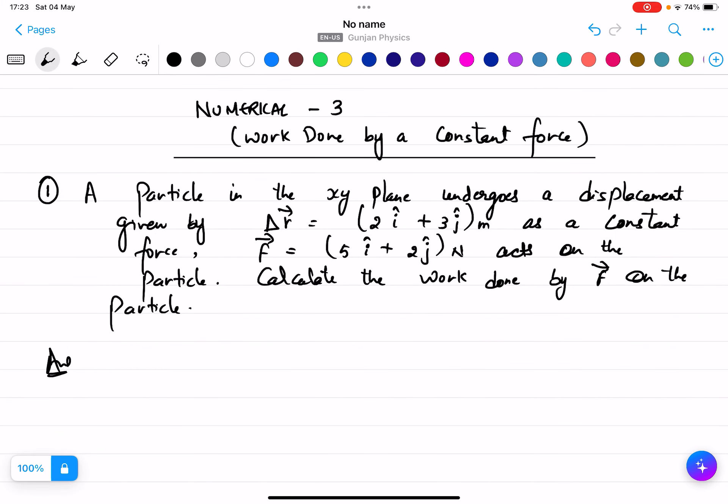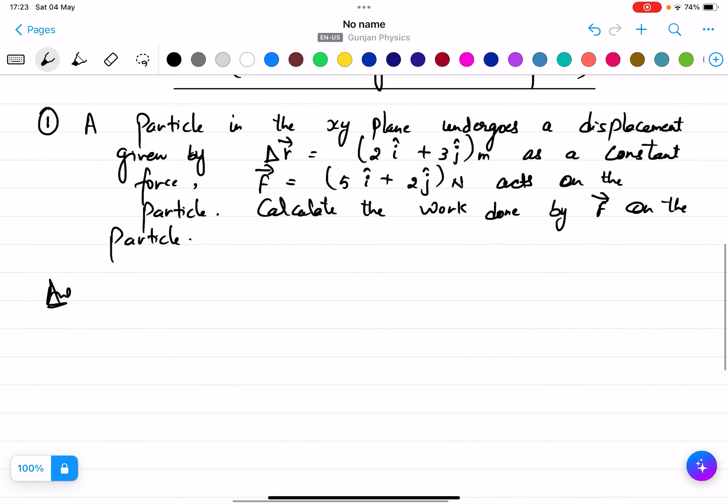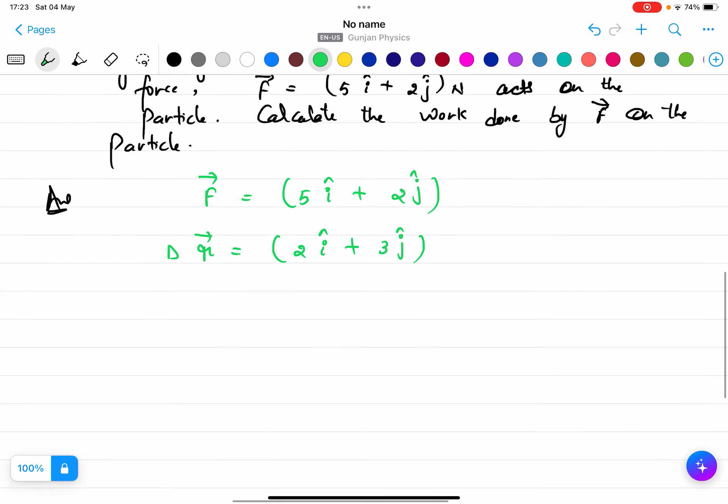Okay, this is a question based on work done by a constant force, but now the vectors are given to us. In this question, the force vector is given as 5i plus 2j, and the displacement vector r is given as 2i plus 3j. We need to find out the work done.